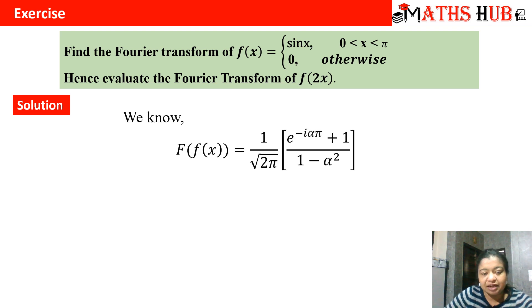I know that the Fourier transform for this function fx is given by 1 by under root 2 pi, e to the power minus iota alpha pi plus 1, upon 1 minus alpha square. Now I have to calculate the Fourier transform for f of 2x. My scale is 2.